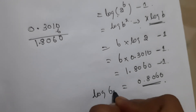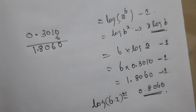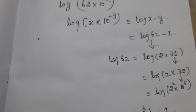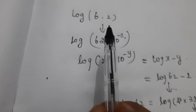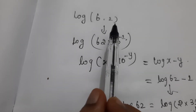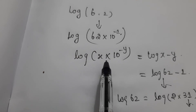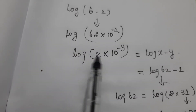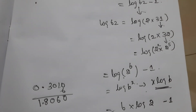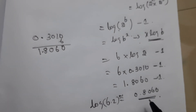So log(6.2) is approximately equal to 0.8060. The steps are: first, rewrite 6.2 as 62 × 10^(−1); then apply the formula log(x × 10^(−y)) = log x − y; then express 62 as a power of 2 and substitute to get the final answer of 0.8060.